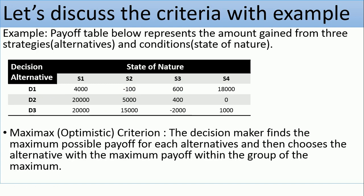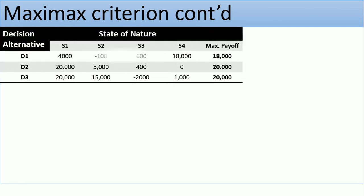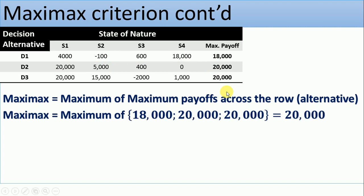Maximax, or optimistic criterion: the decision maker finds the maximum payoff for each alternative and then chooses the alternative with the maximum payoff within the group of maximums. From our example, the maximum in D1 (out of 4,000; -100; 6,000; 18,000) is 18,000. For D2 it is 20,000; for D3 it is 20,000. The maximum of all maximum values — 18,000; 20,000; 20,000 — is 20,000.